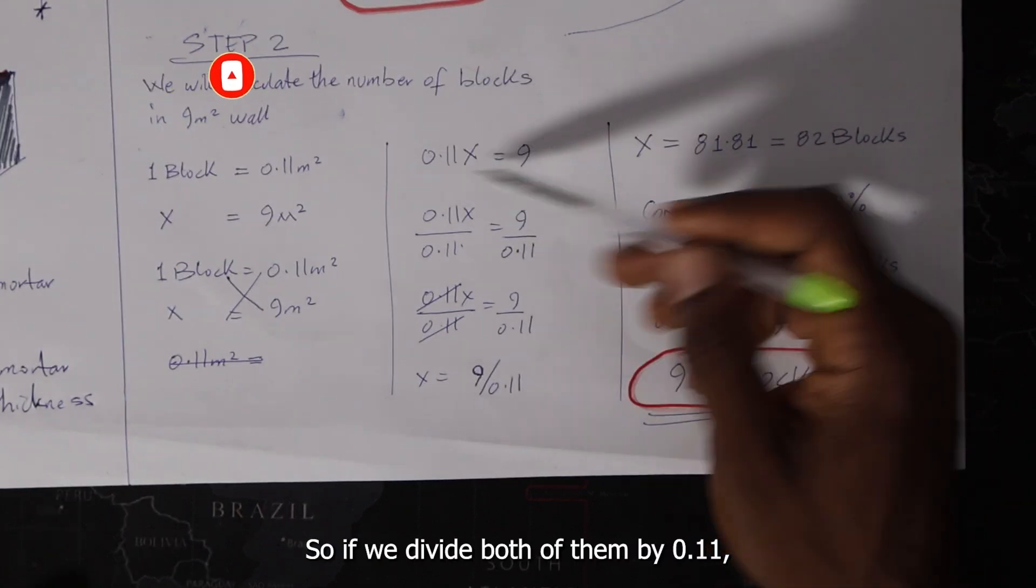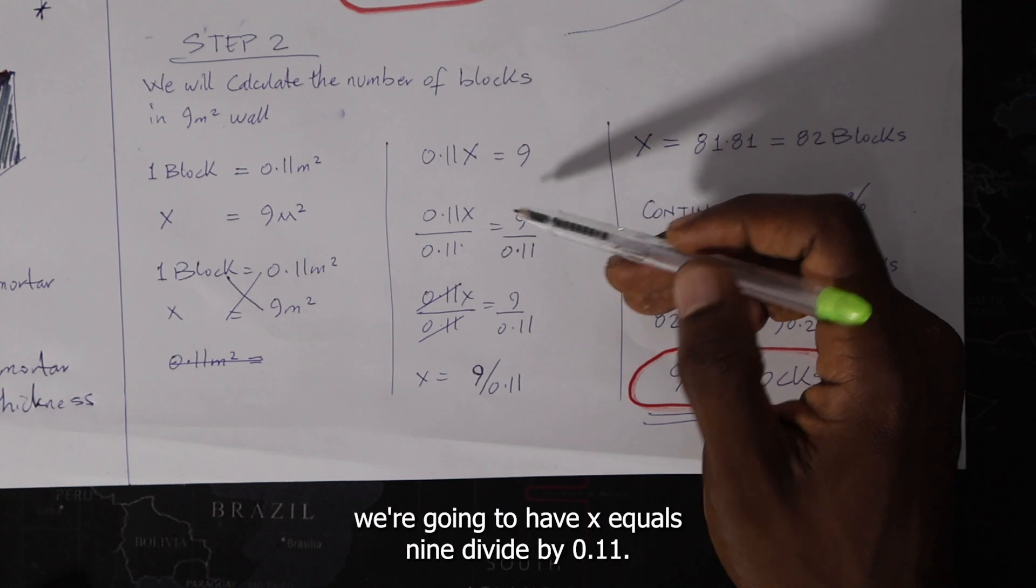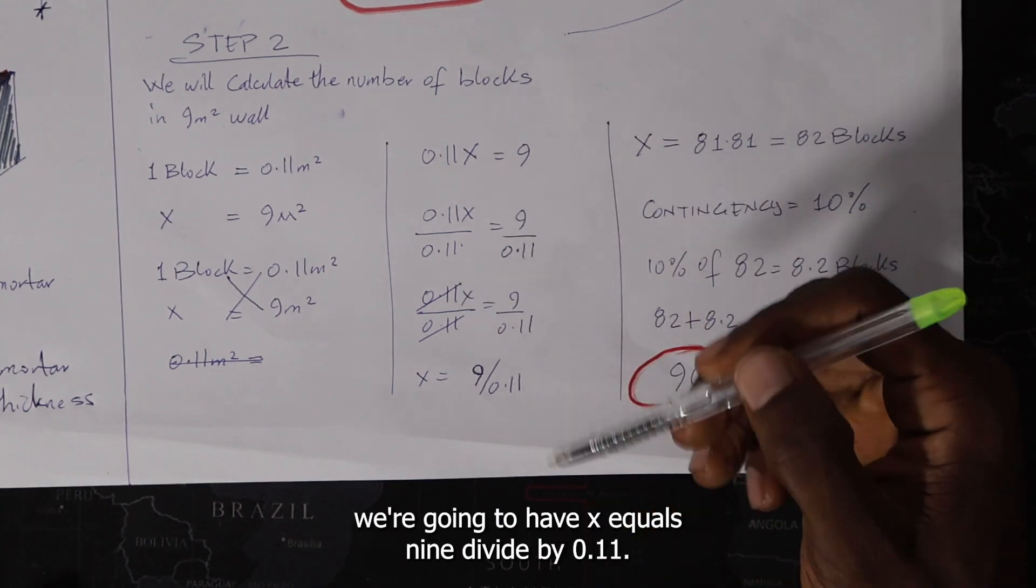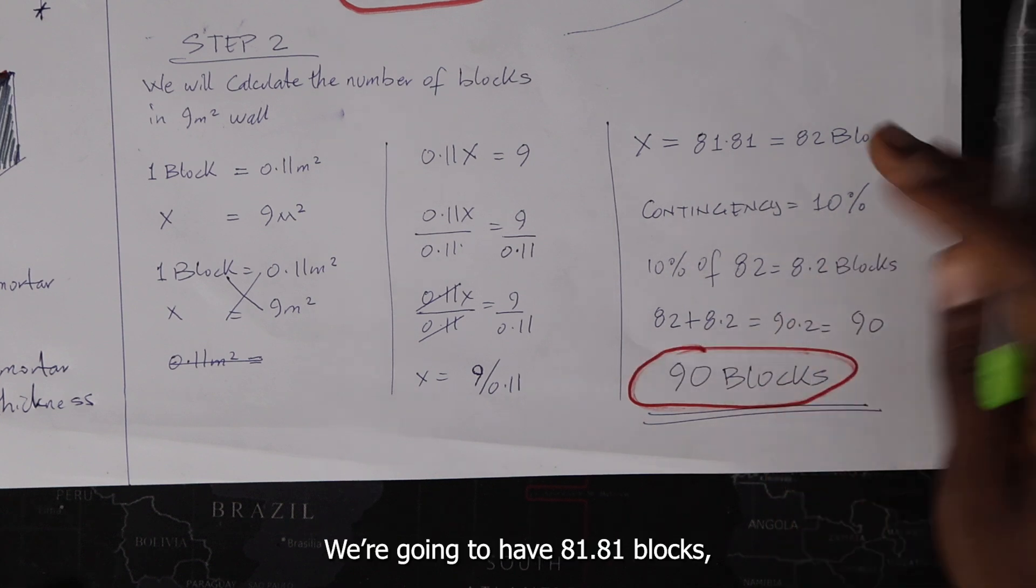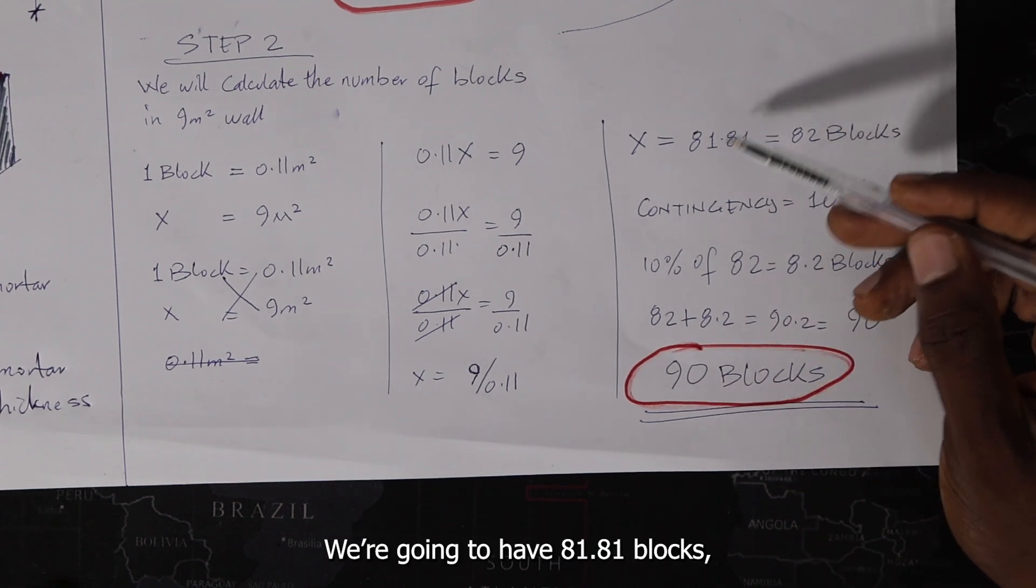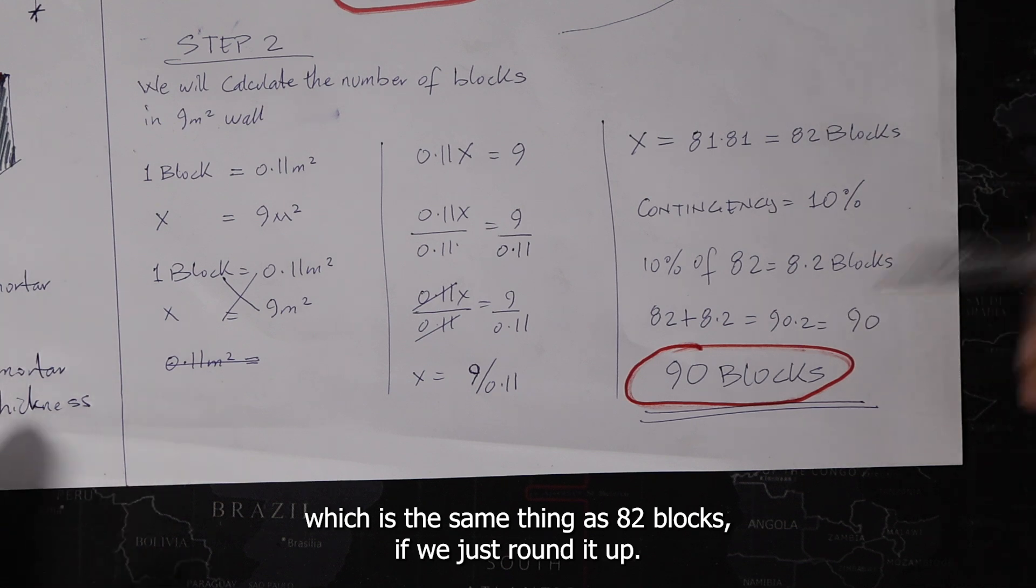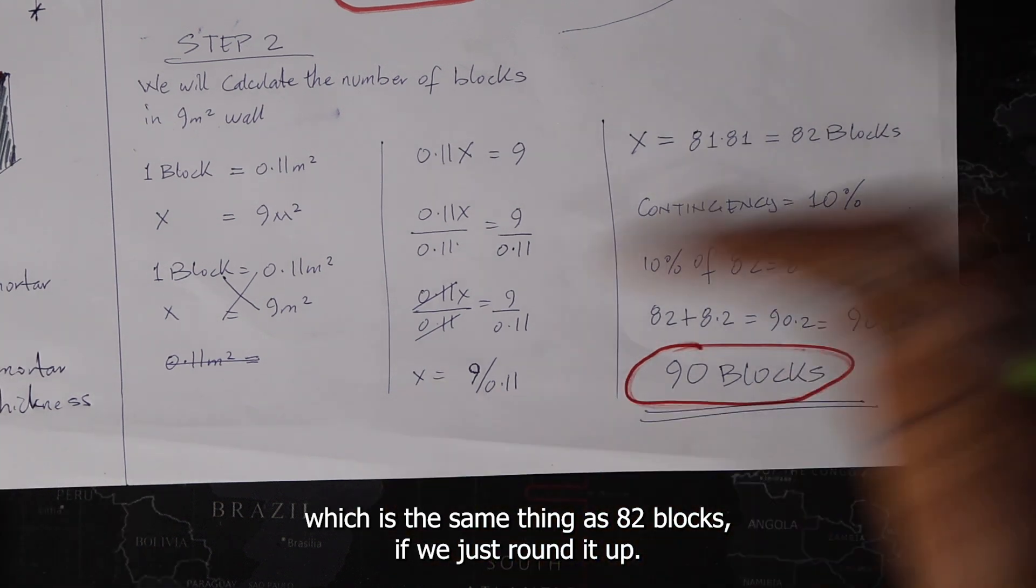So if you divide both of them by 0.11, we're going to have x equals 9 divided by 0.11. And we're going to have 81.81 blocks, which is the same thing as 82 blocks if you just round it up.